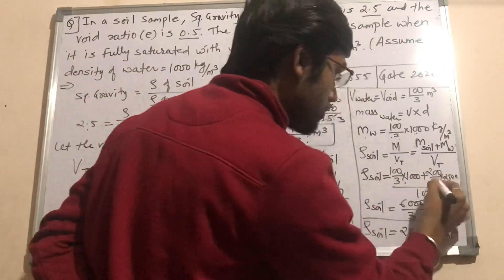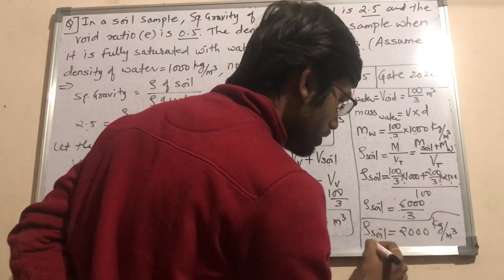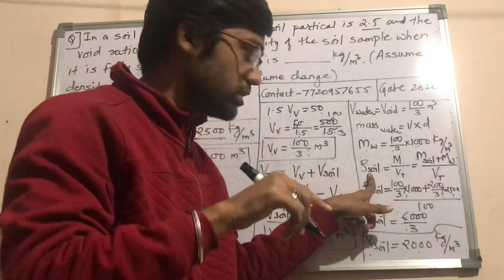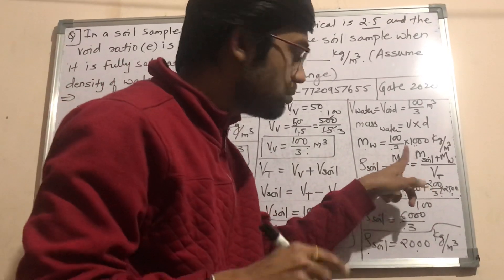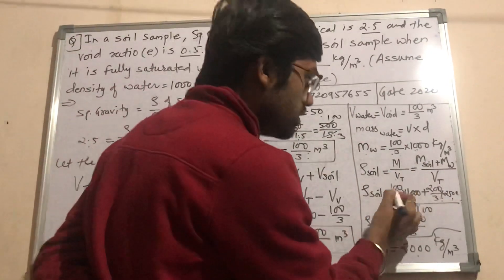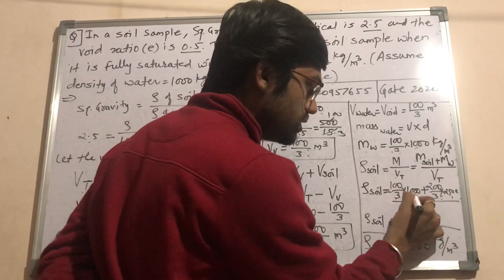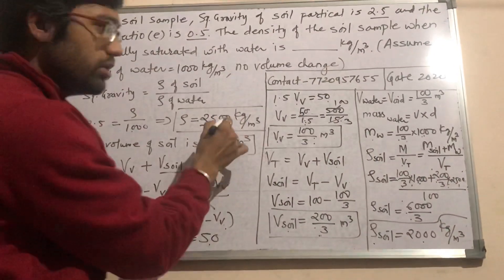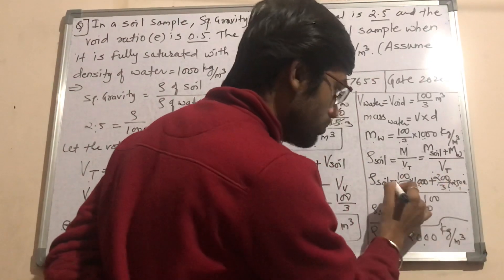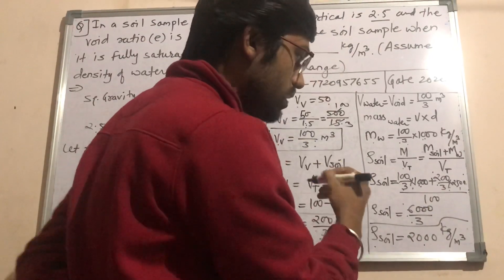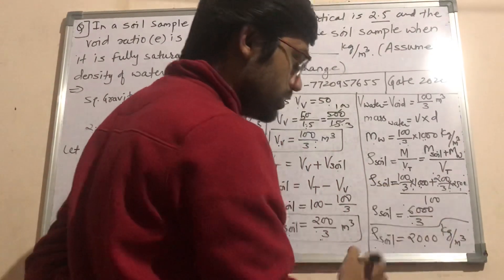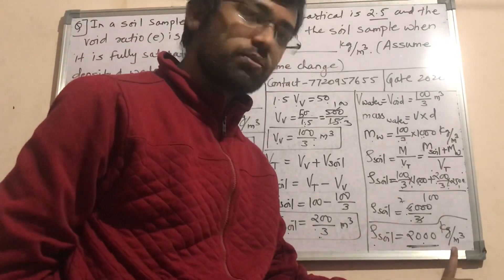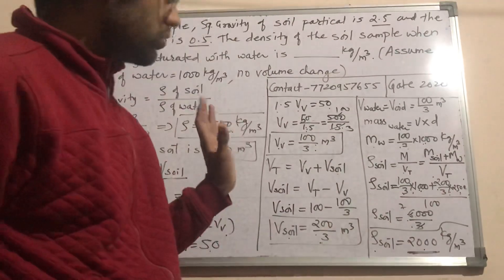Now calculate total density. Total mass equals mass of soil plus mass of water, divided by total volume. Mass of soil equals volume of soil into density of soil: (200/3) multiplied by 2500. Adding mass of water (100/3 multiplied by 1000), and taking 100 as common, you get 6000/3 total, divided by total volume of 100, giving density of soil as 2000 kg per meter cube when fully saturated. This is your final answer.